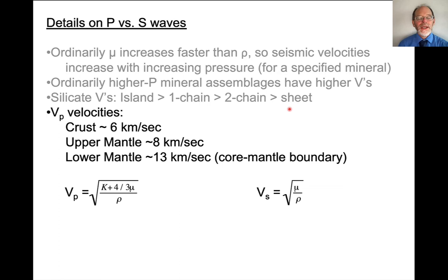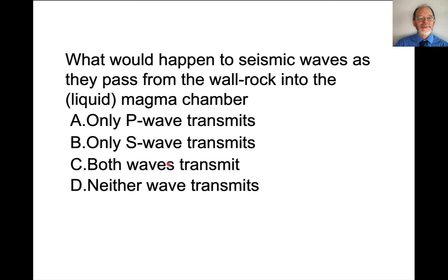Typical velocities for the crust are about six kilometers per second, and for the upper mantle about eight kilometers per second. There is a discontinuity between the crust and the mantle, and this is in fact how many people infer the thickness of the crust — from this shift from crustal velocities to upper mantle velocities. The velocities then increase with some steps up to about 13 kilometers per second at the core-mantle boundary.